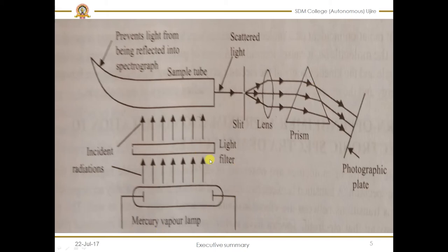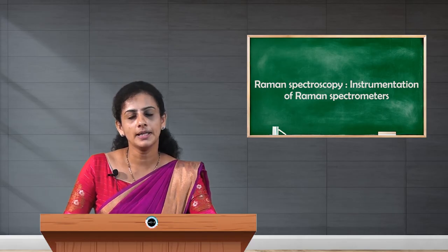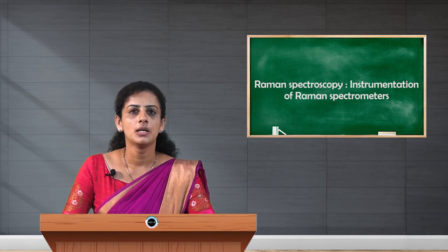Here is the sample source and the sample tube, and there are a slit and lens, a prism, and the photographic plate where we can record the spectrum. The first component is the Raman source. Since the frequency of the scattered light is very very less, that is about 0.01 percent of the incident radiation, an extremely intense source of radiation is used here. For example, mercury arc lamp and lasers are used as a Raman source. If lasers are used as the source, then filtering is not necessary because the energy output is in the form of monochromatic light.